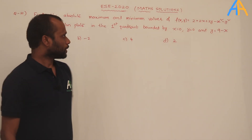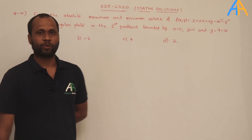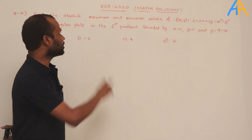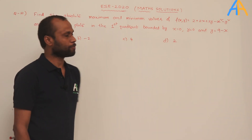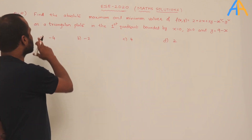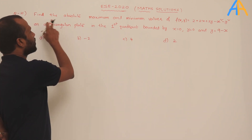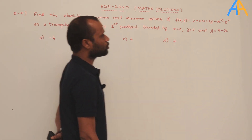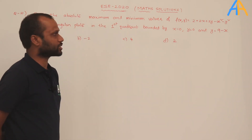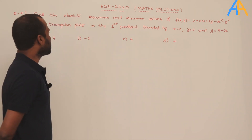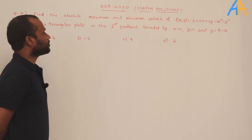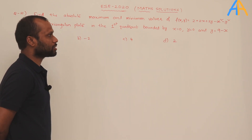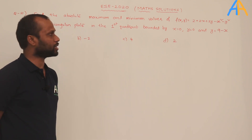Hello everyone, let us quickly discuss the solutions of the mathematics part of the EIC 2020 prelims exam. Question number 21: find the absolute maximum and minimum values of f(x,y) = 2 + 2x + 2y − x² − y² on a triangular plate in the first quadrant bounded by x = 0, y = 0, and y = 9 − x.